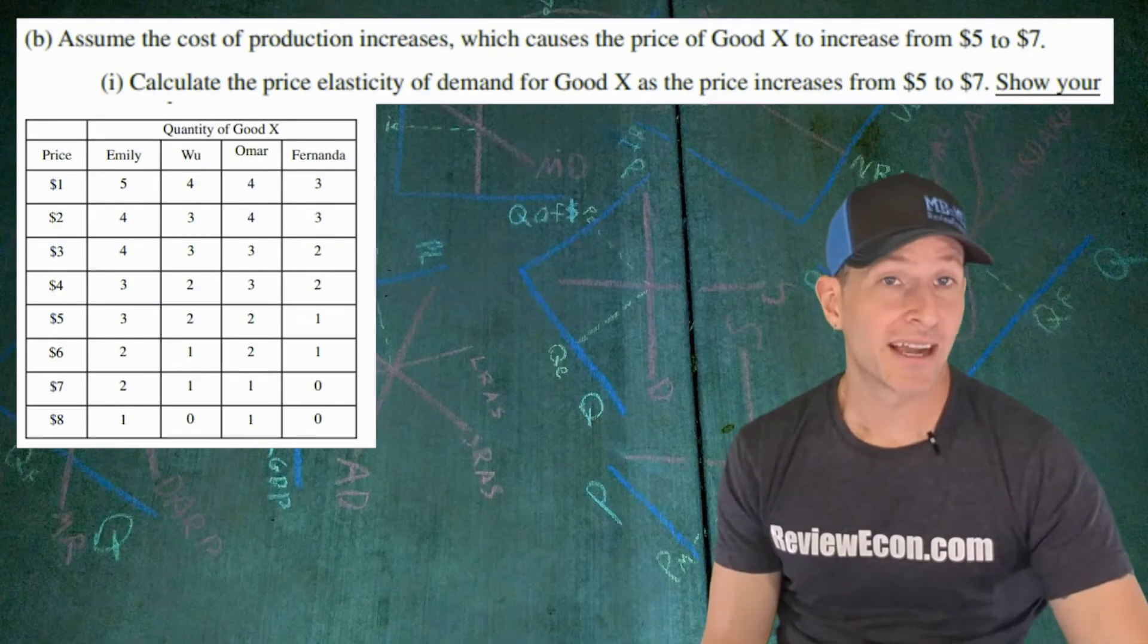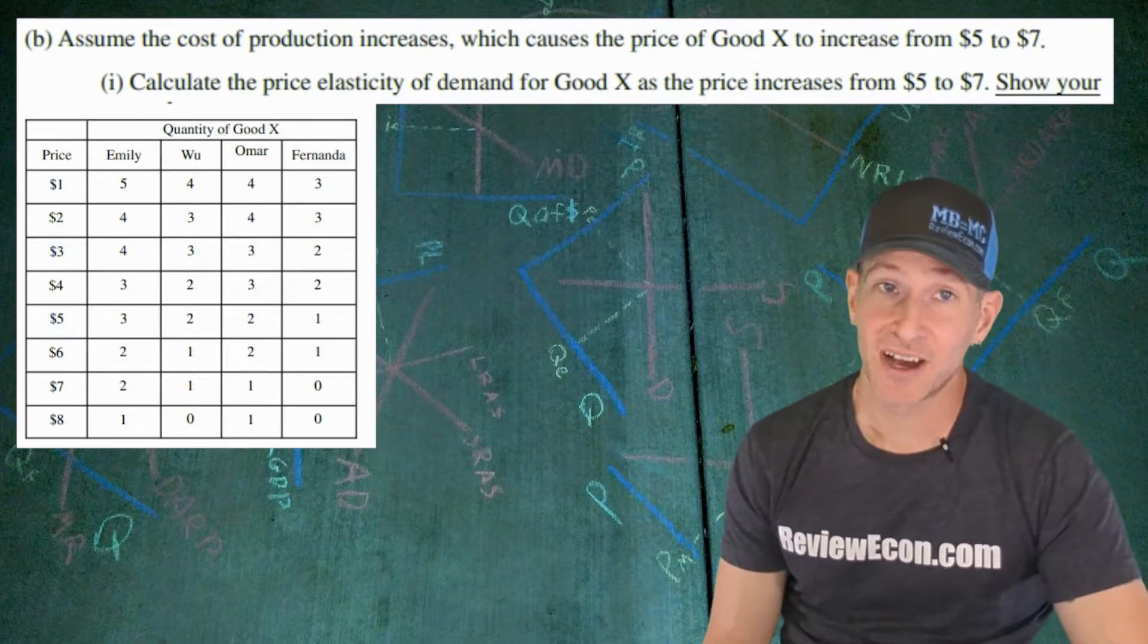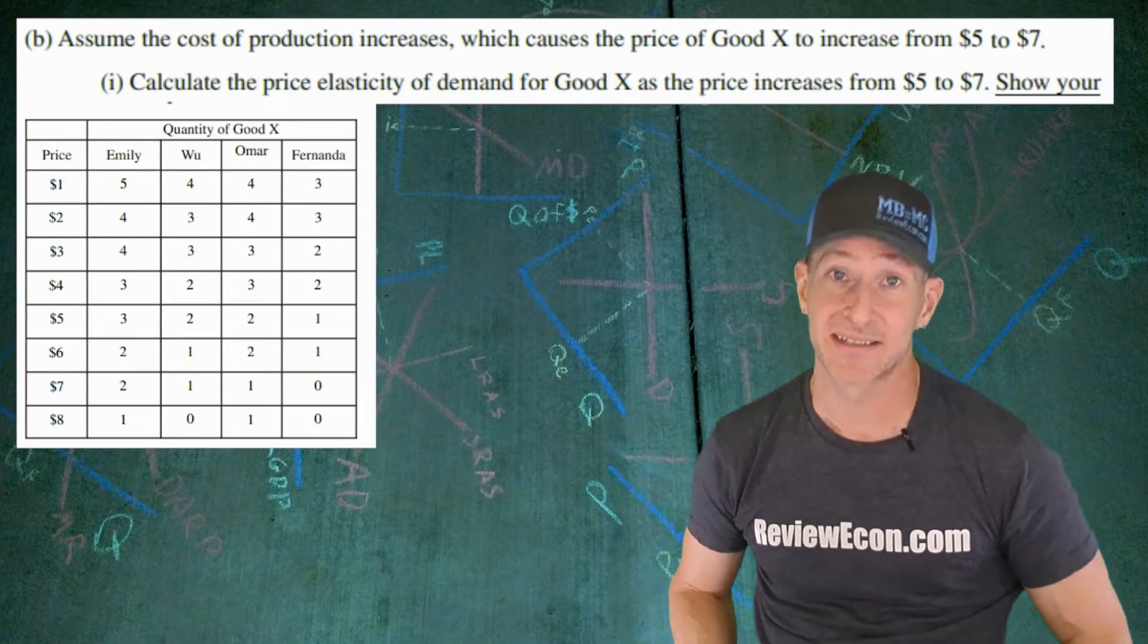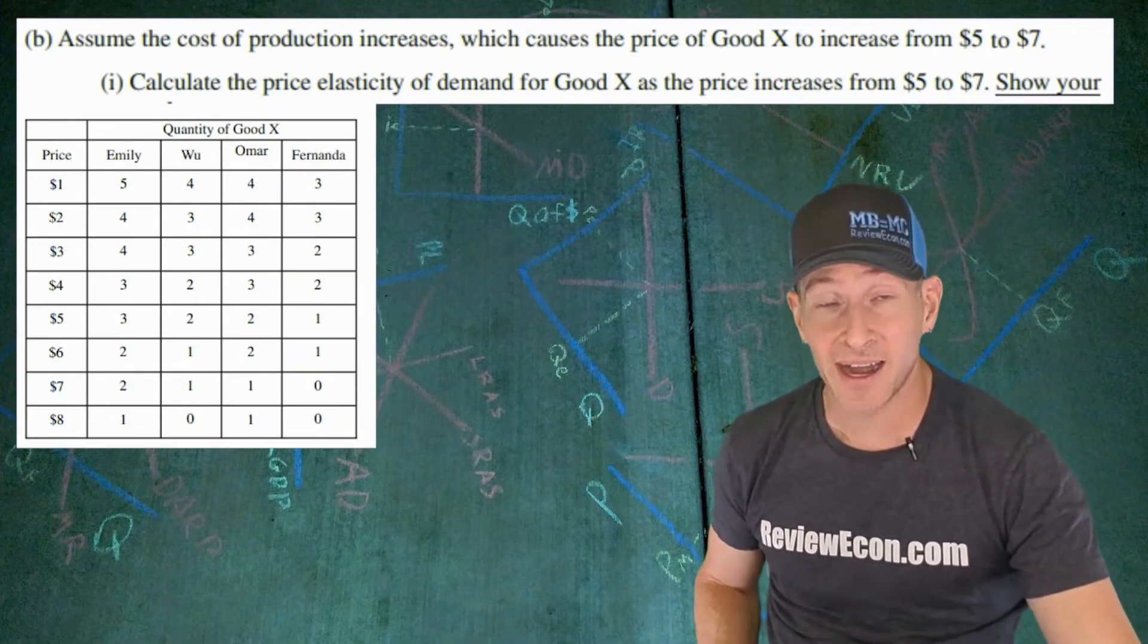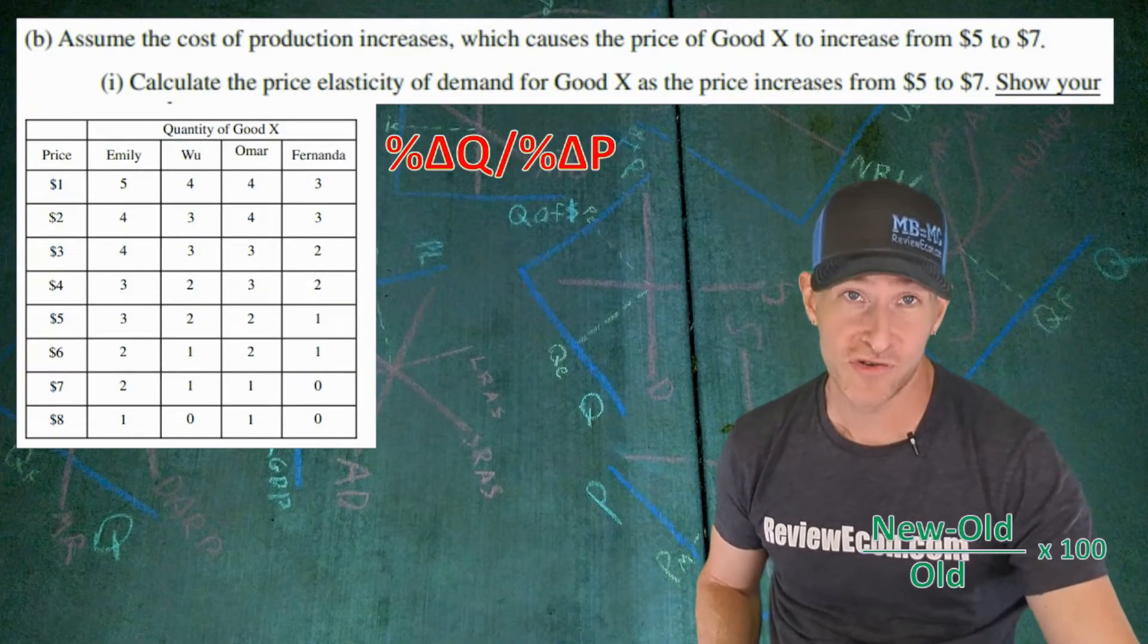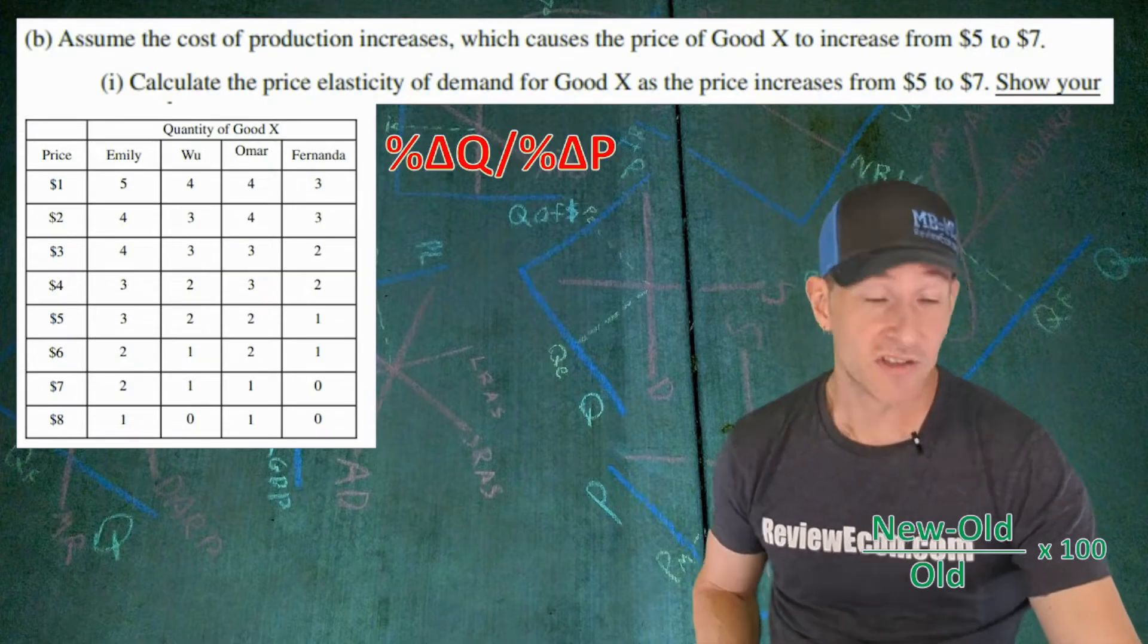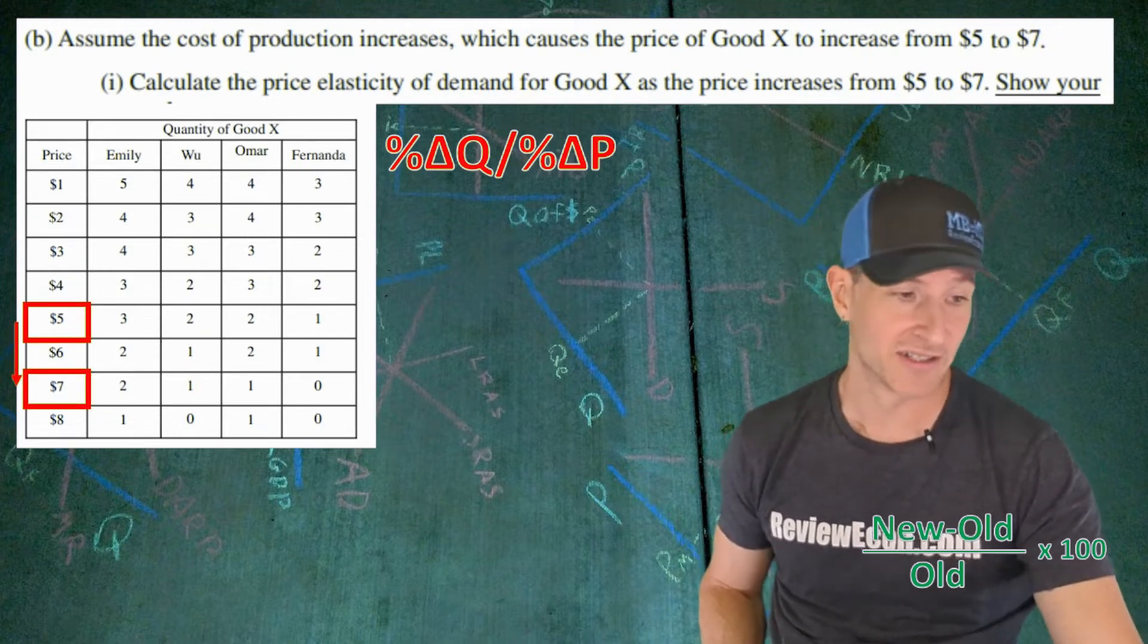For part BI, we have to calculate the elasticity coefficient for good X when the price increases from $5 to $7. Now, there are two different ways of calculating elasticity coefficients, but for the AP economics exam, the preferred method is the endpoint method. So, we are going to be calculating the percentage change of quantity divided by the percentage change in price. And since we are using the endpoint method, we need to use new minus old divided by old times 100 to calculate the percentage change for both quantity and price.